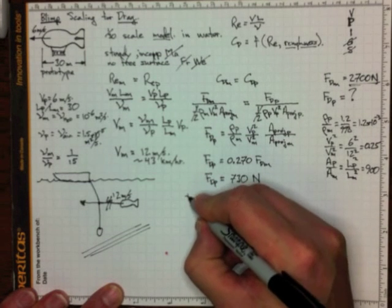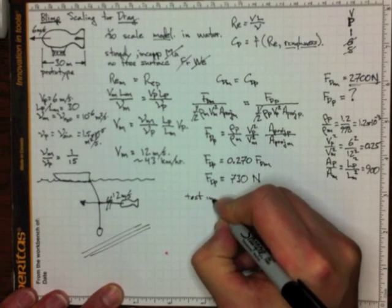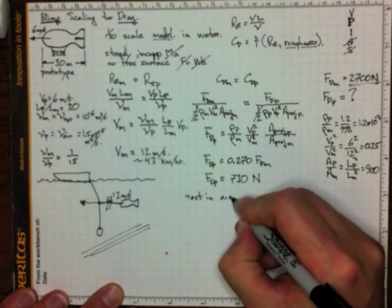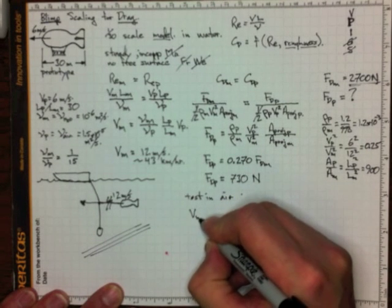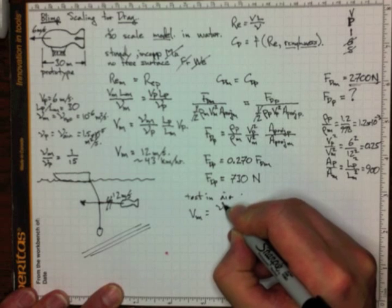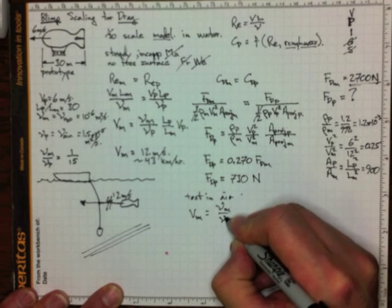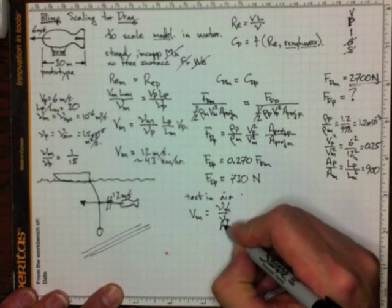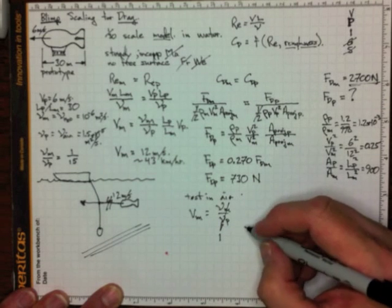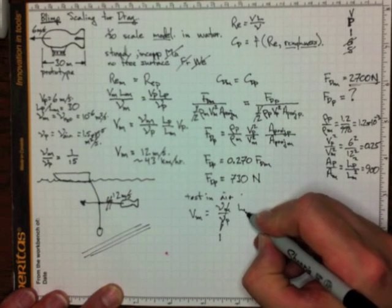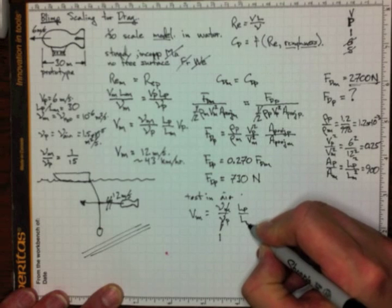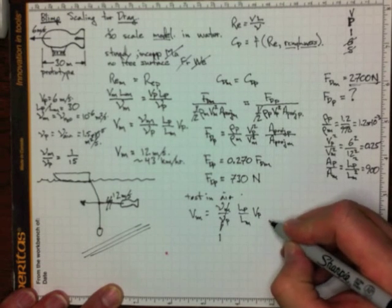So, test in air, velocity for the model would have to be equal to viscosity for the model over viscosity for the prototype. That's just equal to 1 because it's the same fluid. Length for the prototype over length for the model times velocity for the prototype.